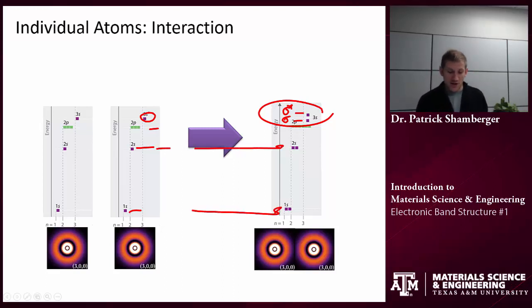So a couple things to notice here. If we start off, the total number of orbitals that we start off with has to equal the total number that we end up with. So we have two atoms.